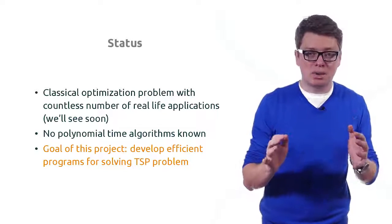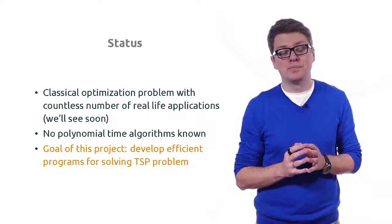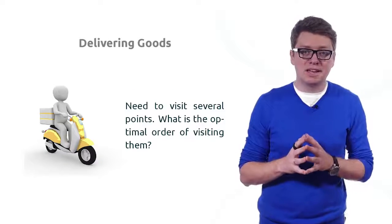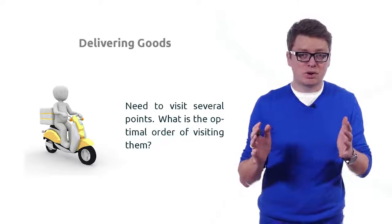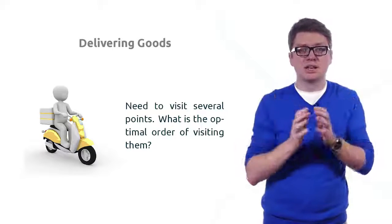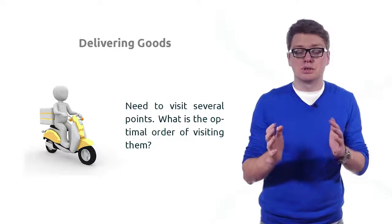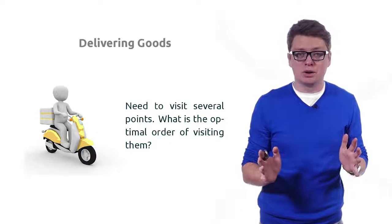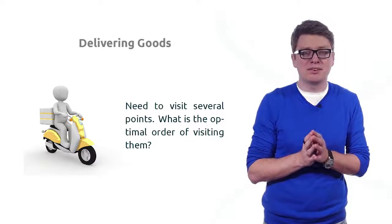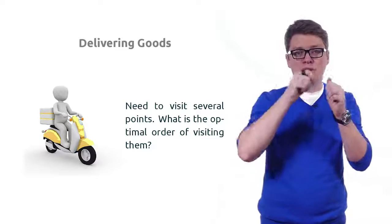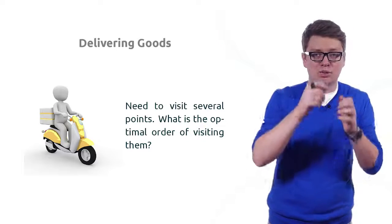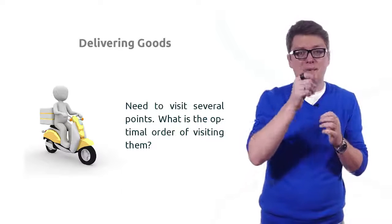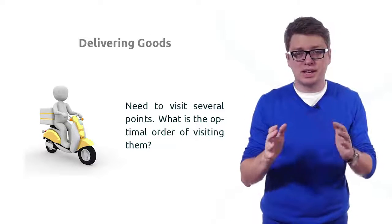As for applications, the most obvious comes from the delivery problem: we need to visit several locations to deliver goods. This is a problem solved probably millions of times per day by delivery companies. We have several points, we know all the distances between them, we want to visit all of them and return back — so we are looking for a traveling salesman cycle of minimum total length.